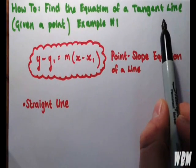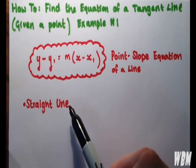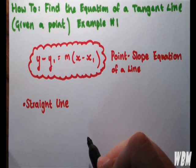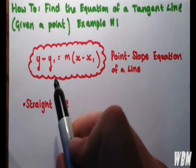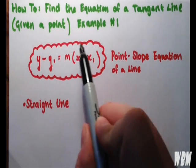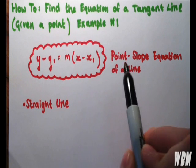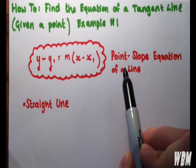Now, the equation of a tangent line is a straight line that runs tangent to the line that you're given in the question. The important formula to know in this situation is the point-slope equation of a line,